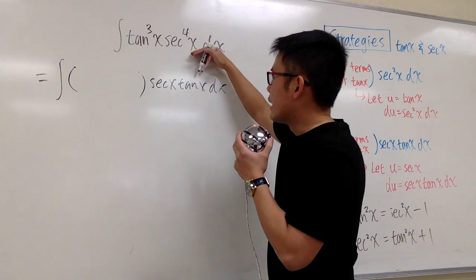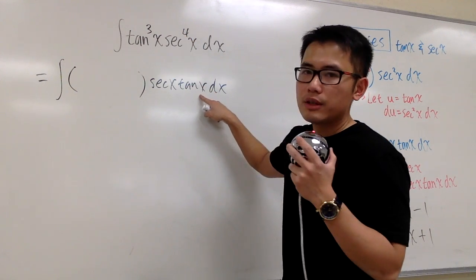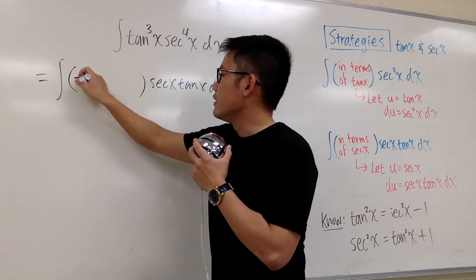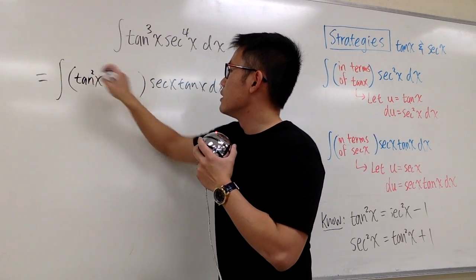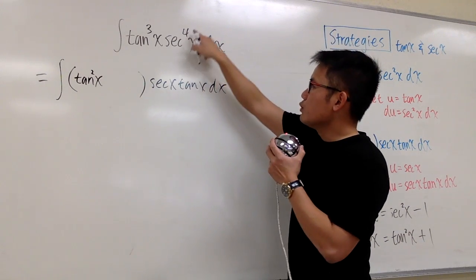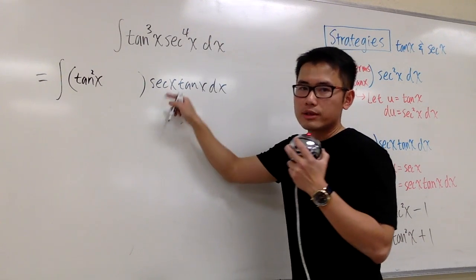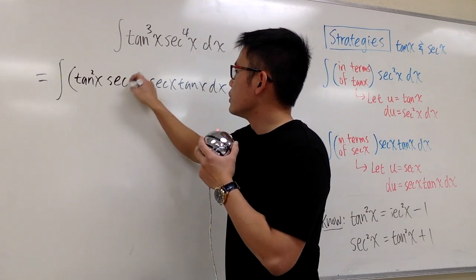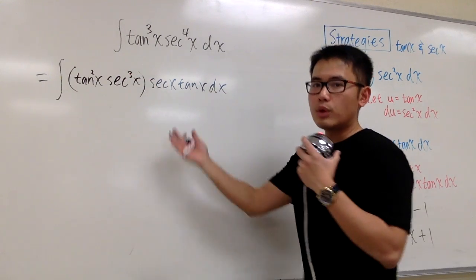Originally, this is what we have. Tangent to the 3rd power, but I took one out, so we have tangent squared left in the first part. Originally, we have secant to the 4th power x, but we took one out, so we have secant to the 3rd power x. So that's what we have.